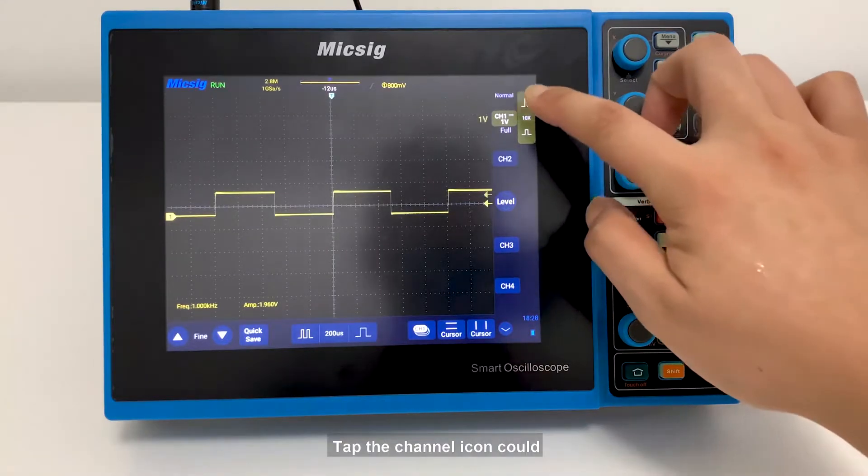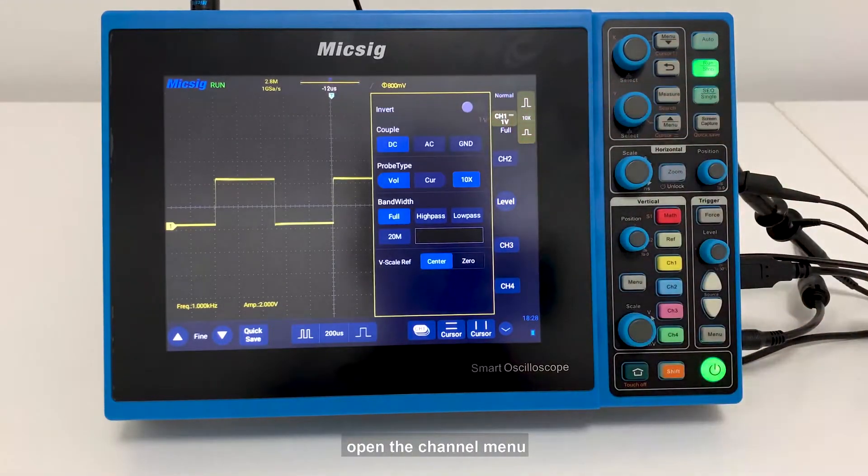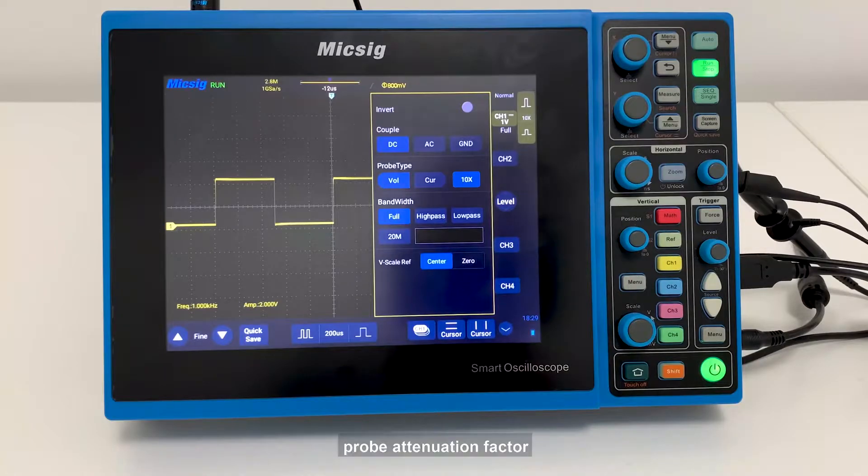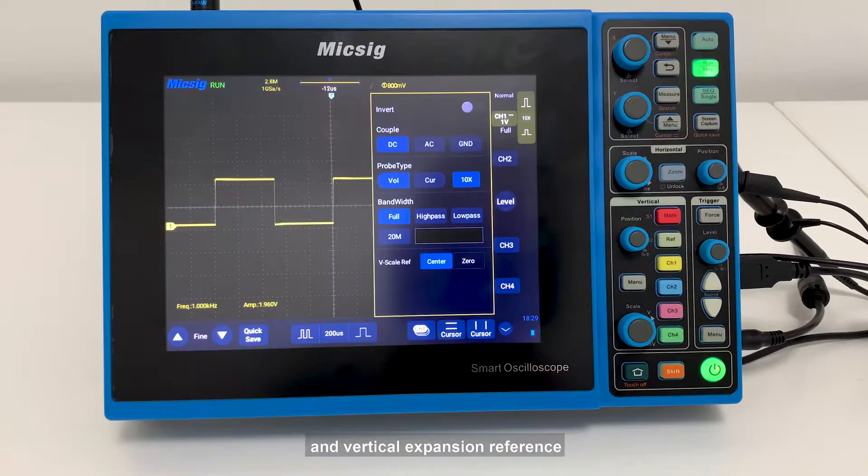Tap the channel icon to open the channel menu, which includes channel waveform inversion, channel coupling mode, probe type, probe attenuation factor, channel bandwidth limit, and vertical expansion reference.